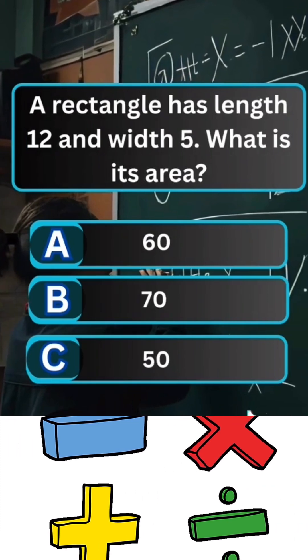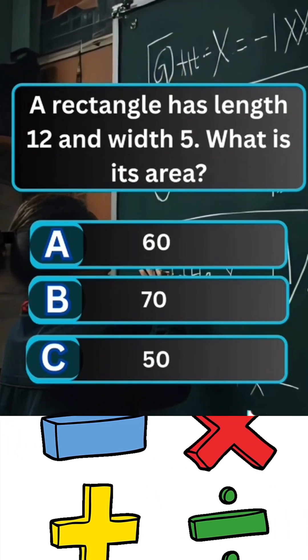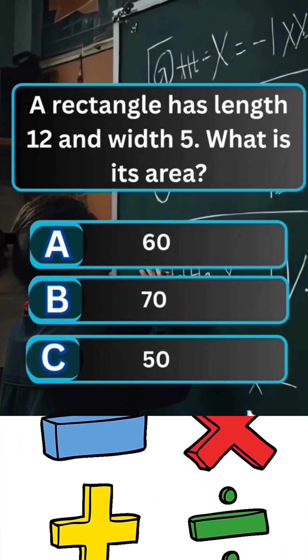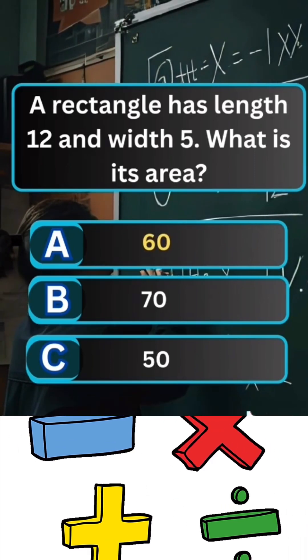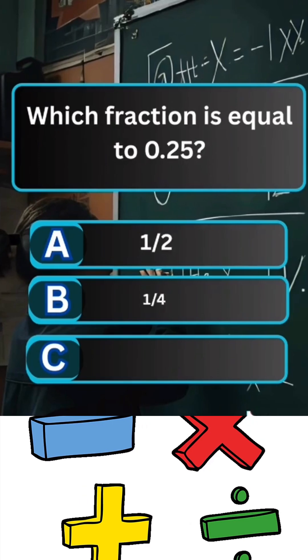Question 6. A rectangle has length 12 and width 5. What is its area? Answer A. 60. Question 7.